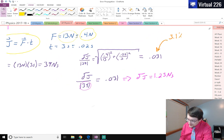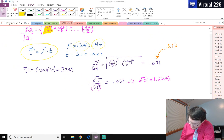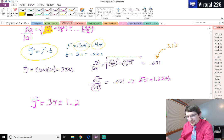So that allows my final answer for J to say that hey, the impulse here was equal to 39 plus or minus 1.2 newton seconds.